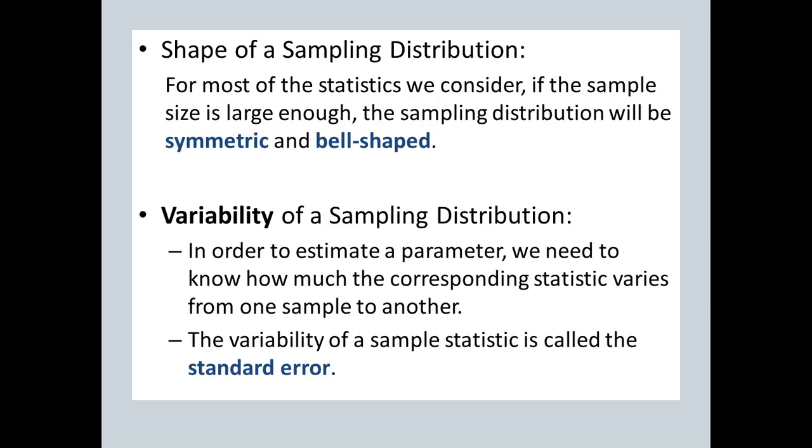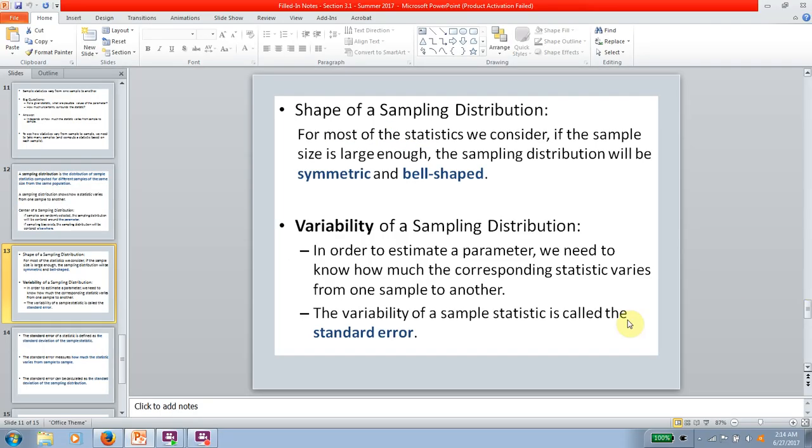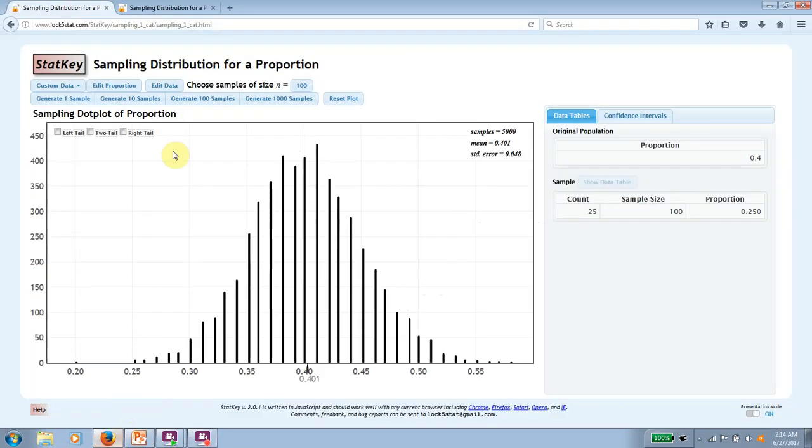The shape, which we've already seen at this point, if you have a large enough sample size, the shape of your sampling distribution will be symmetric and bell-shaped, and that's what we just saw with the samples of size 100. The natural question is what happens when your sample size isn't large enough.